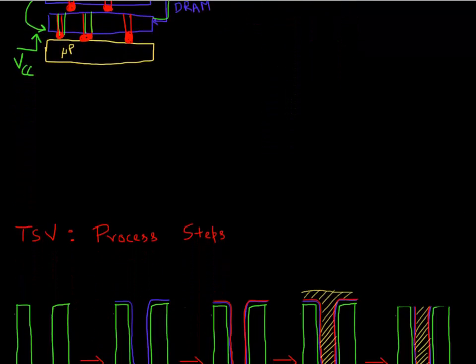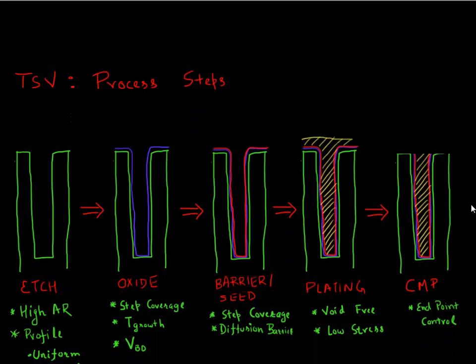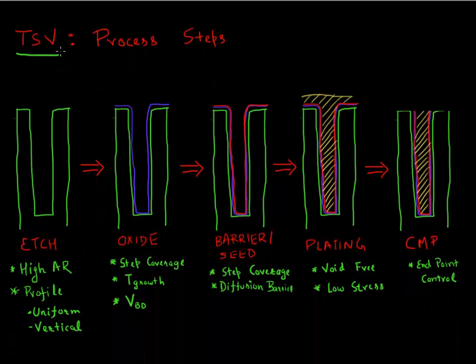So let's look at the unit process which is involved for making this through silicon via or TSV. These are the different process steps which you would have to encounter if you need to make a through silicon via. The first thing that you need to do is etch this silicon, this trench into the silicon, which would act as your TSV, in which you'll fill up your TSV material.